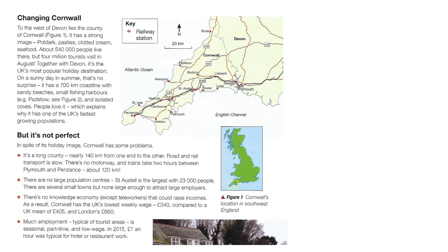Much employment, typical of tourist areas, is seasonal — part time and low wage. This means people might only be employed for half of the year in the summer months. Also, thinking about the current climate, Cornwall will have been hit really hard in the pandemic because people were not going there on holiday as frequently, and tourism is its main economy.